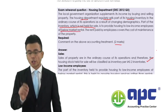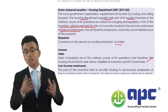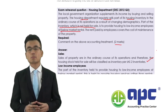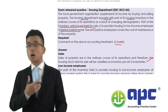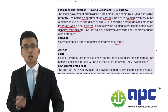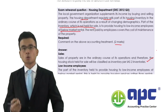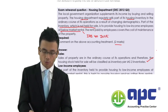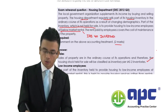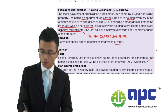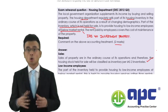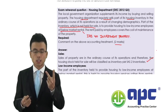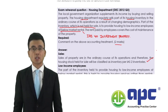We are charging those low-income employees in the local government, but the rent is below the market rate. It seems the housing department is holding those houses for rental purposes. According to IAS No. 40 Investment Property, if you are holding property not for use in your business and not for resale, but for rental purposes or capital gain, you would account for those houses under IAS No. 40.